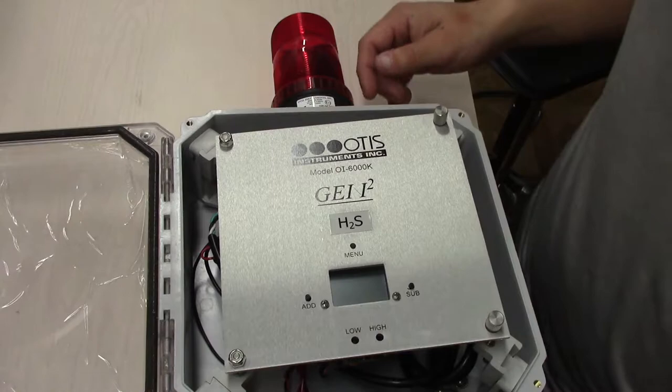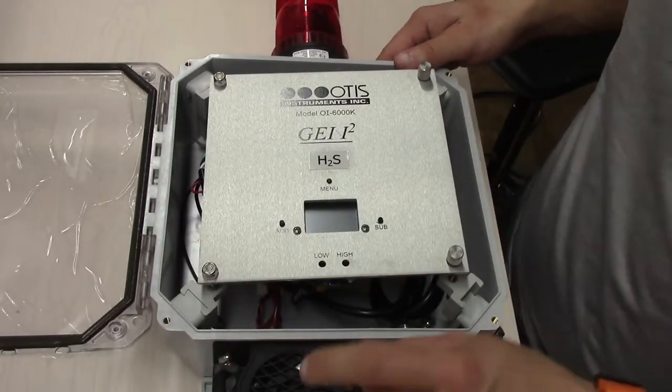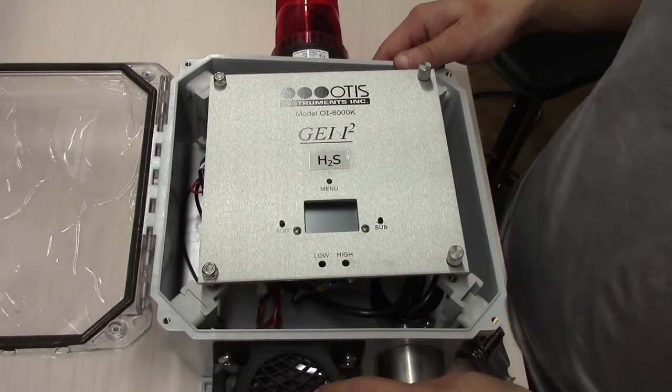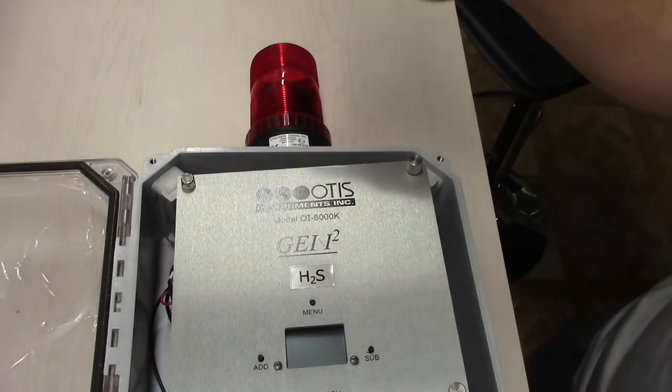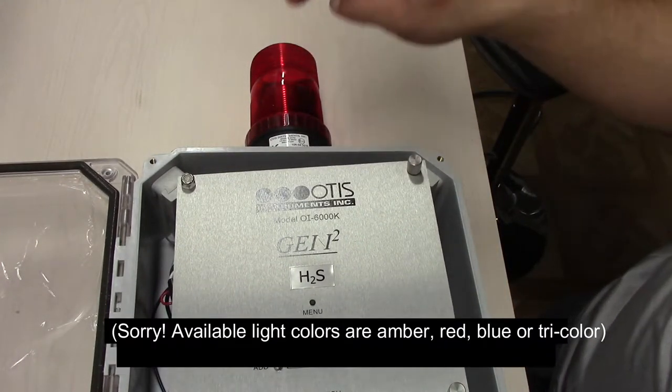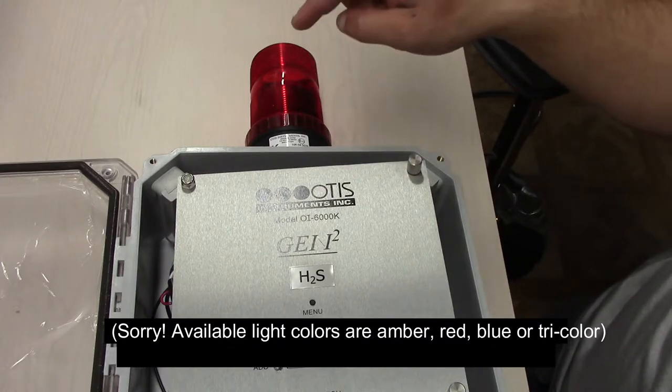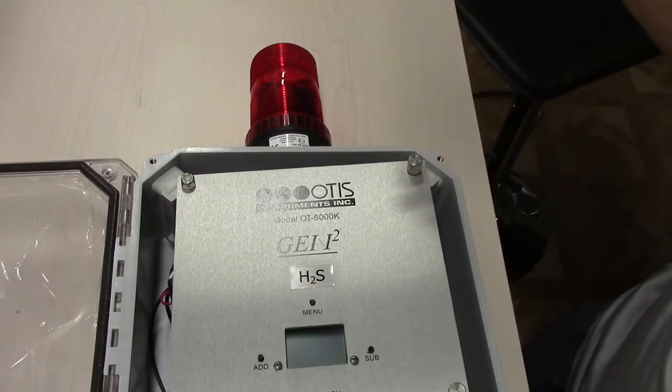This is a really loud alarm horn, 102 decibels, very loud. And then this light can be one of three colors: amber, orange, and blue, or you can have a tri-color. You can choose the colors.